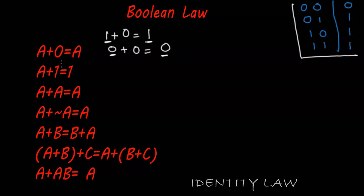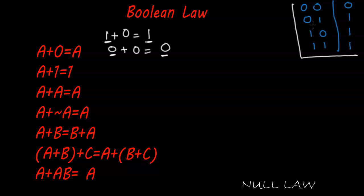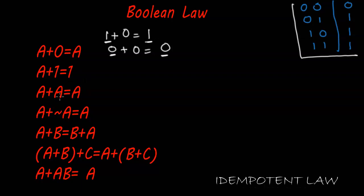Whatever the value of a is, that is what the output gets. So a plus zero equals a — this is called the Identity Law. Moving forward to the Null Law: one plus one equals one, and zero plus one equals one. Now a plus a — where both inputs are the same — zero plus zero equals zero and one plus one equals one.